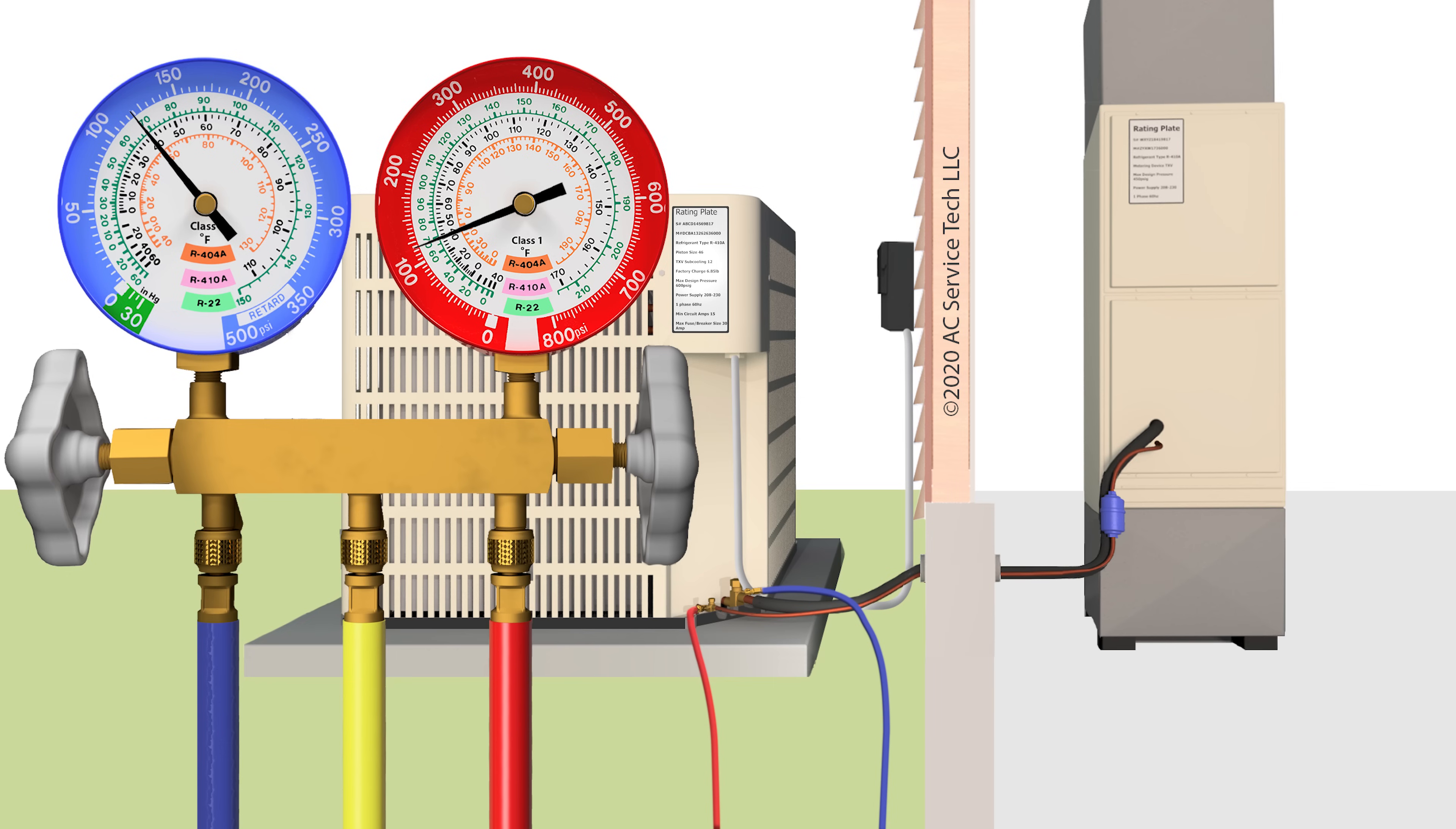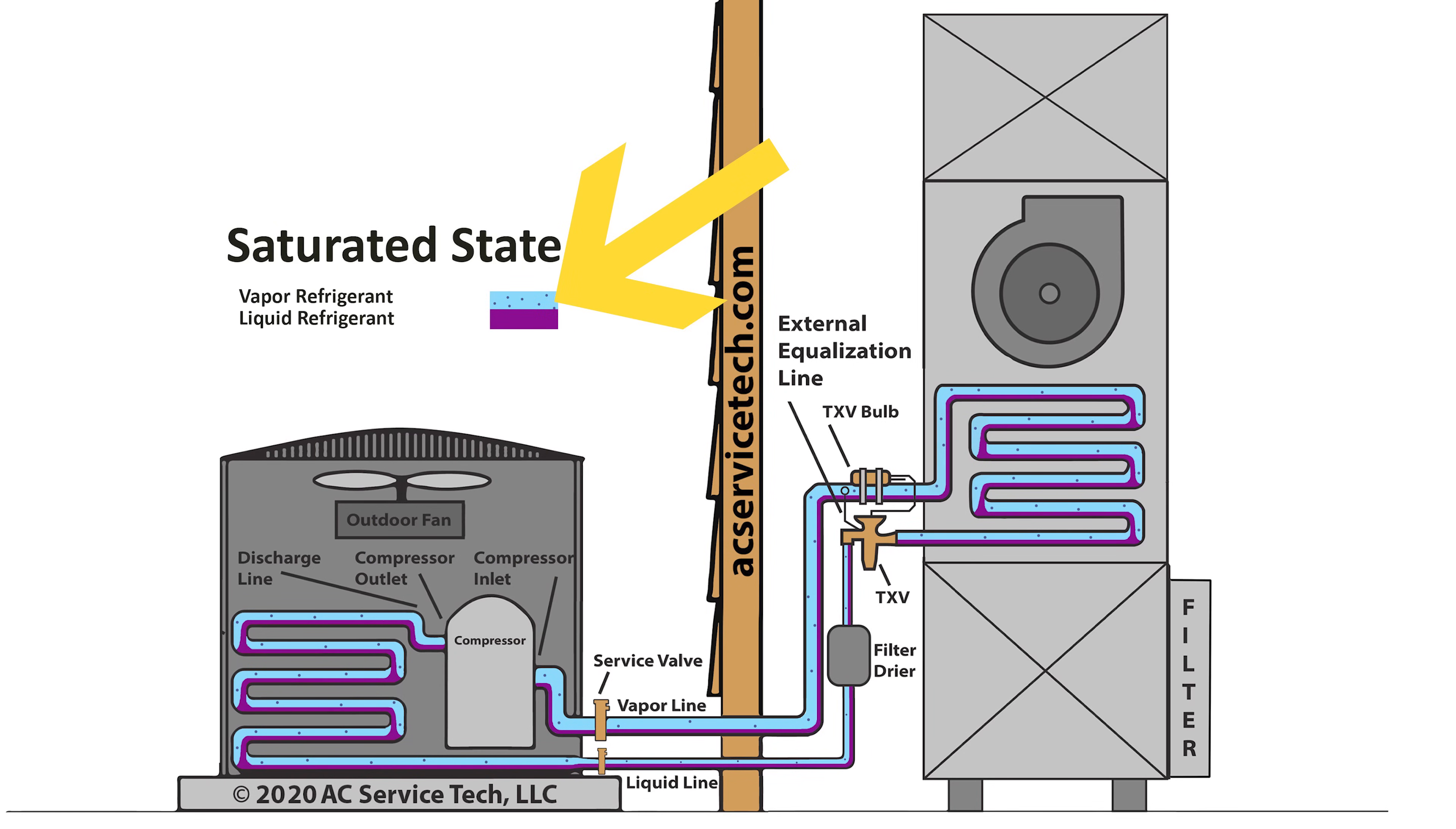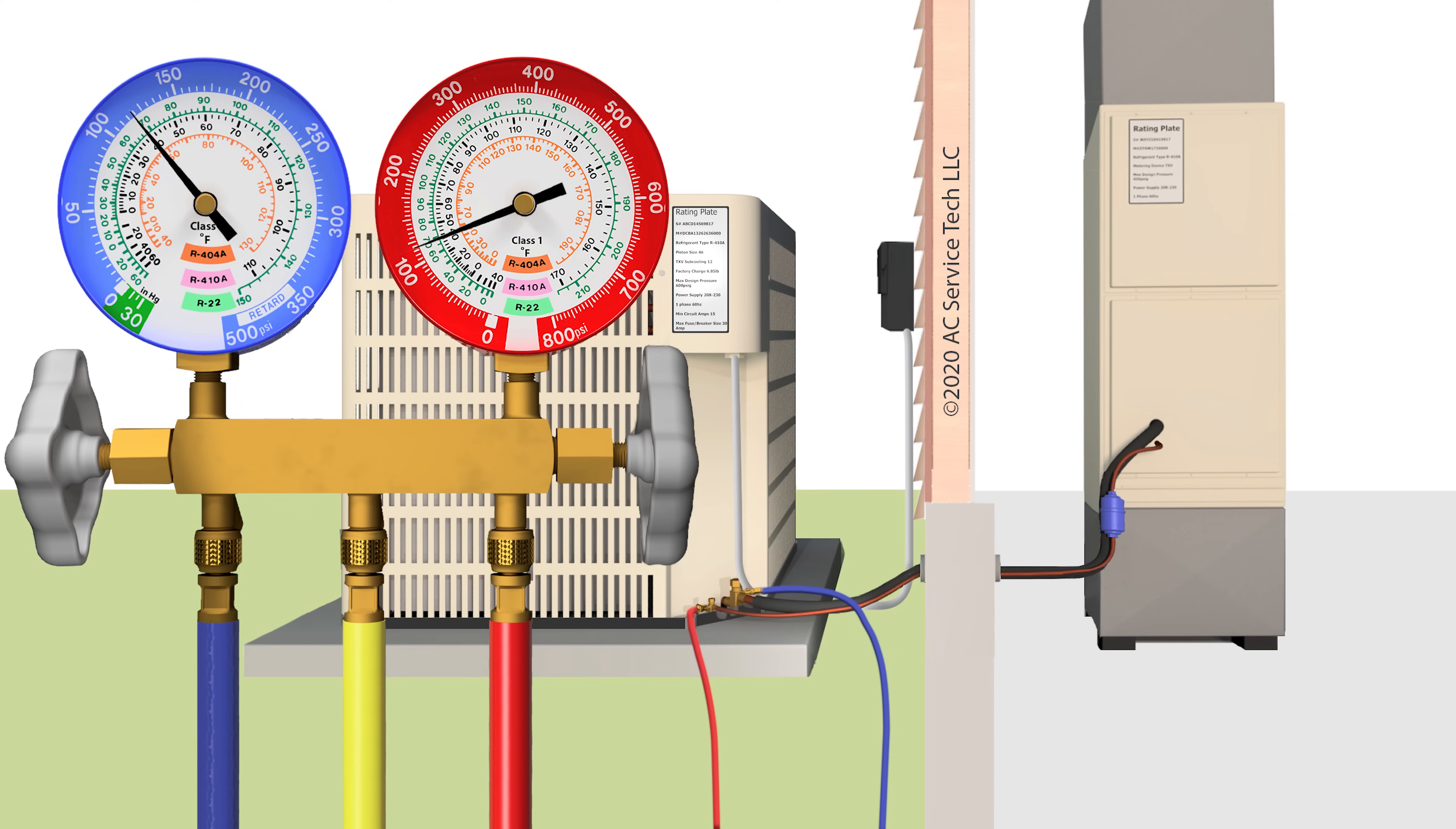So we already know we don't have saturated refrigerant in this system. Saturated means that liquid and vapor both exist at the same time, and this is telling us that we only have vapor refrigerant in this system. If you only have vapor refrigerant and no liquid, that means you've leaked out about seven eighths of your full refrigerant charge, and you don't even have to turn the system on to know that you're very low on refrigerant.